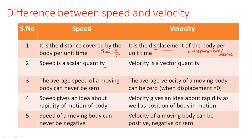Speed is a scalar quantity and velocity is a vector quantity. The average speed of a moving body can never be zero — there will always be some magnitude value. However, the average velocity of a moving body can be zero, because it has both magnitude and direction, and directions may cancel, making displacement zero.